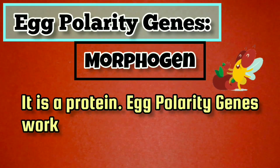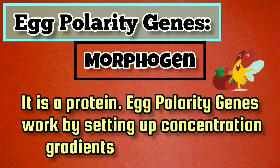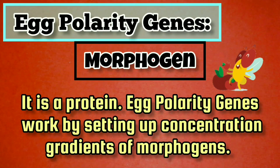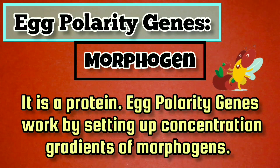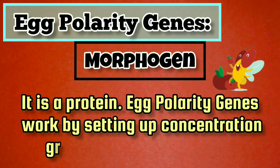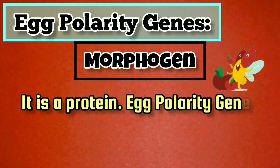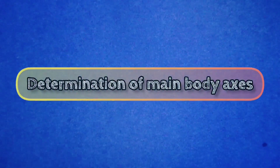A morphogen is a protein that varies in concentration. Egg polarity genes function by producing proteins that become asymmetrically distributed in the cytoplasm, giving the egg polarity.